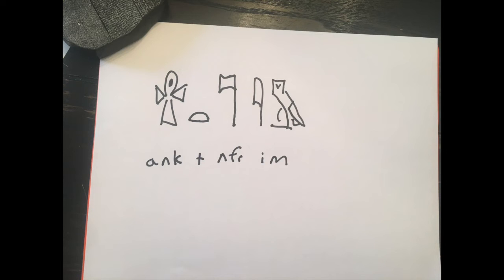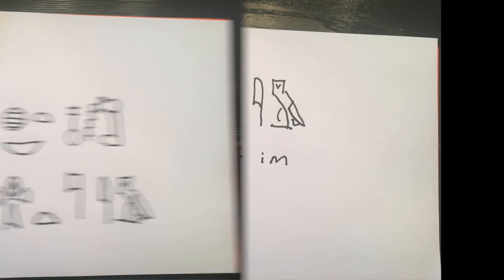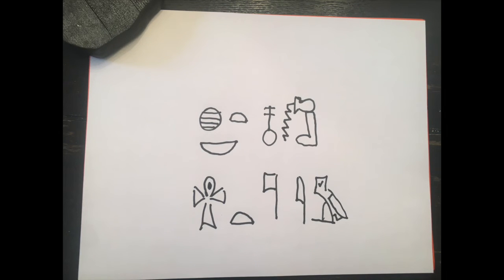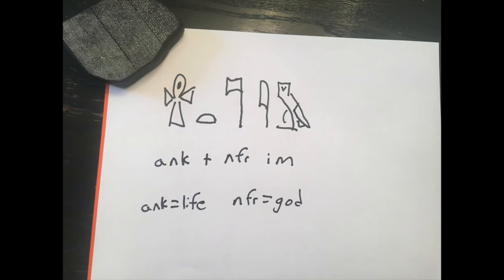Our second phrase is ankh nefer im. This is another very common phrase, and it's best to look at it as a phrase unto itself. We're going to break it apart, but when you see it, know that that is how it's pronounced, and you're going to see it in combination with khutnub nefer wab because they flow as sort of one description. We may recognize some words: we've got ankh, which means 'life.'